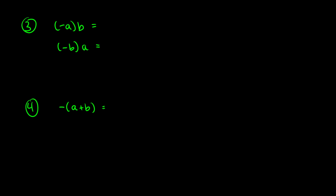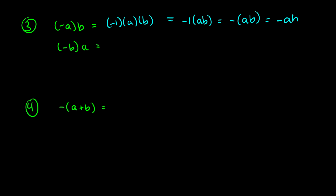Now if we take a negative number such as negative a and multiply it by b, we treat this like negative 1 times a times b. So we can say this is a times b multiplied by negative 1, which is the same as negative ab. These are all equivalent. Typically when you have a times b with a negative sign out front, we write this as negative ab without the brackets — that is also acceptable.